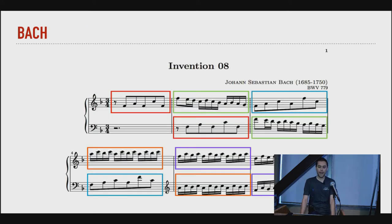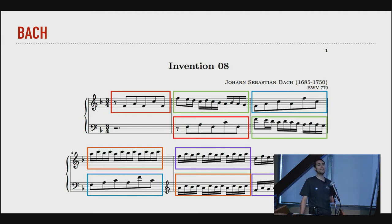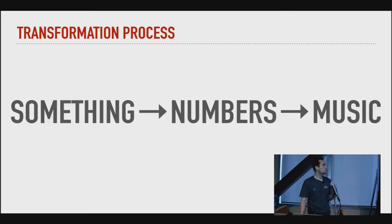I was reading how Bach used a lot of symmetry in his compositions, and there are people who have been able to find numeric relations between those notes — a lot of it sounds like conspiracy theories, but I'm sure there are some numerical attributes in the music Bach wrote. So I thought: I need to create a process, an algorithm that would transform anything into music, using math as the bridge. I would have something transformed into numbers, and then transformed into music.